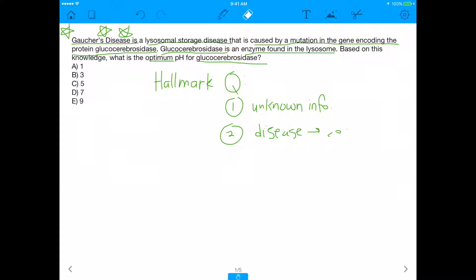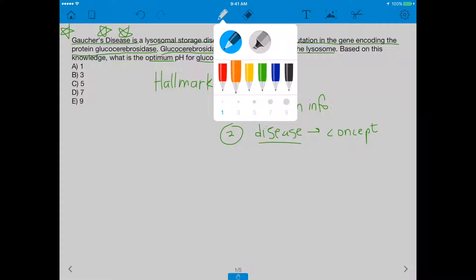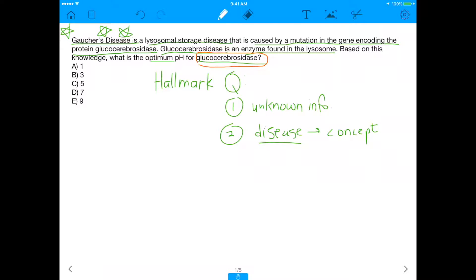But the second thing that's going to make this a hallmark MCAT question is that it takes this disease, this Gaucher's disease, and it connects it to a concept. That is where the MCAT just loves capitalizing on students, because as a doctor, you're dealing with diseases. So the fact that they can ask you questions on diseases is something the MCAT really loves to do. This isn't really a question about the disease. It's asking about the enzyme glucocerebrosidase, connecting it to a concept about enzymes, which you should have learned in school.